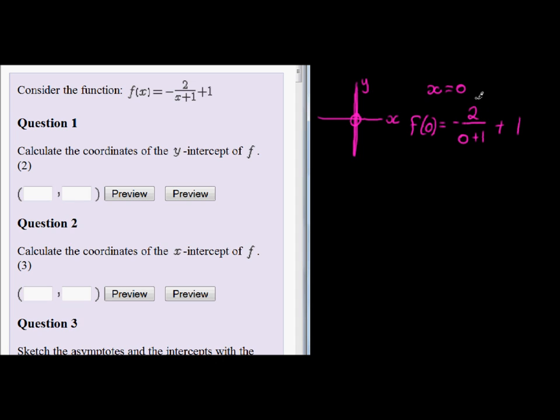So negative 2, and in the denominator 0 plus 1 is 1, which gives us -2/1. Negative 2 over 1 is negative 2, plus 1 is negative 1. That means the coordinates are x is 0 and y is negative 1.